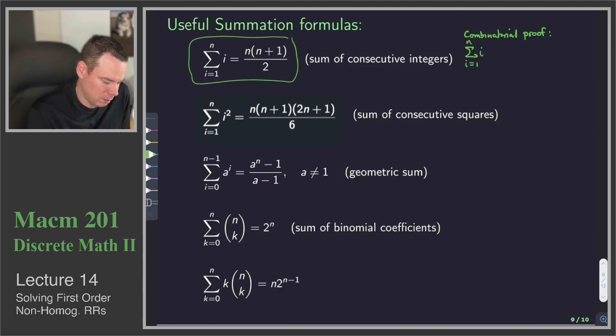And so here's how we can count them. i equals 1 to n, the sum of i. Well, that's just the number of edges in the complete graph on n plus 1 vertices. Why is that? Well, think about how we can build the complete graph on n plus 1 vertices.